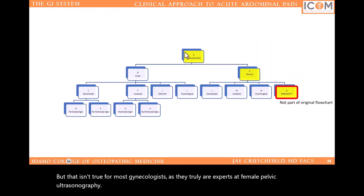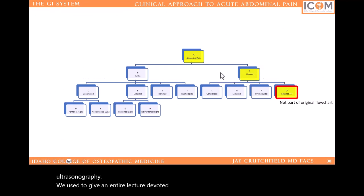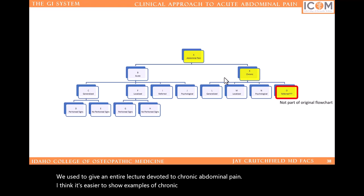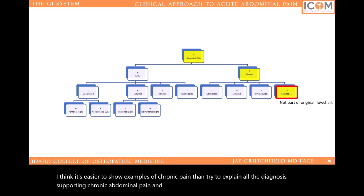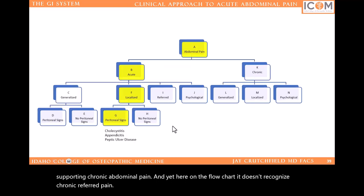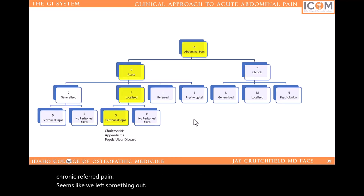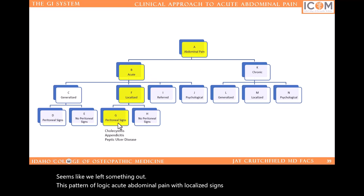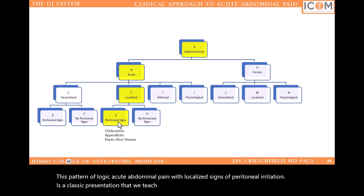We used to give an entire lecture devoted to chronic abdominal pain. I think it's easier to show examples of chronic pain than try to explain all the diagnoses supporting it. And yet, here on the flowchart, it doesn't recognize chronic referred pain. This pattern of logic — acute abdominal pain with localized signs of peritoneal irritation — is a classic presentation we teach medical students, representing the patient who needs immediate surgical consultation. But that isn't always the case.